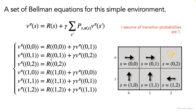And the only unusual Bellman equation here is this one for the state zero comma two, because this is our terminal state. So the agent only receives the reward and the game kind of ends — there are no possible future states. You can also think of this as setting all of those transition probabilities to zero in that state, so that's why there's nothing, just zero standing to the right of this reward.